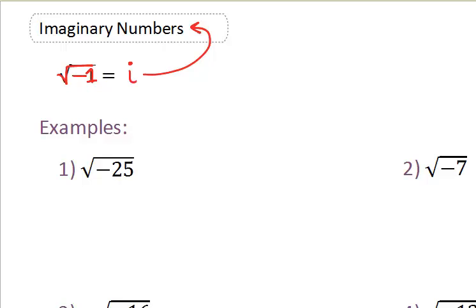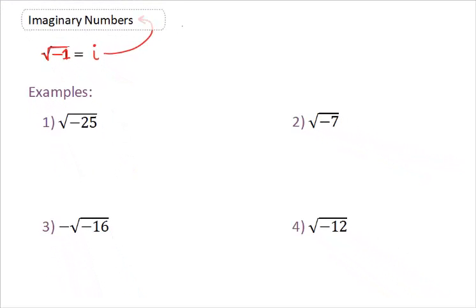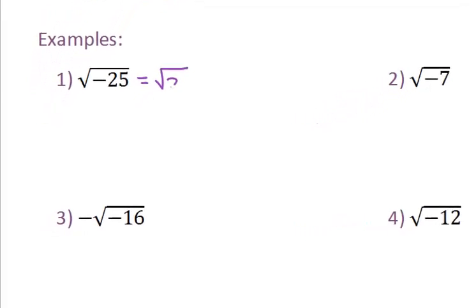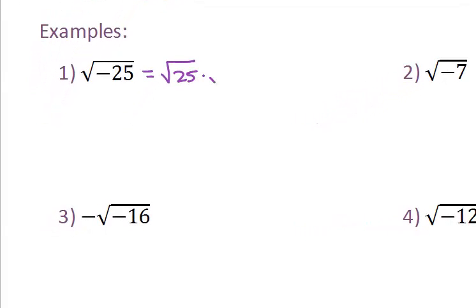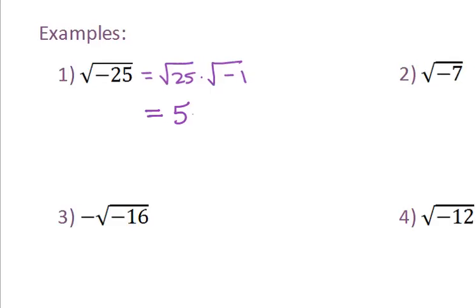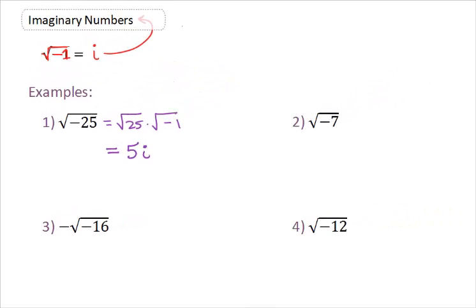Okay. So back to that example that we just saw before. Square root of negative 25. We can flip this into two roots. The square root of 25 times the square root of negative 1. But most of the time we won't do this. We know that we can do this all in our head. The square root of 25 gives us 5. And we just learned that the square root of negative 1 gives us i. So this problem, now we can simplify it. It simplifies as 5i.